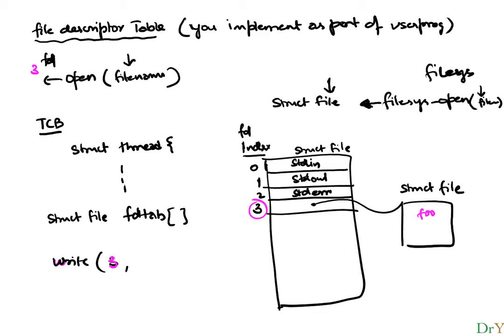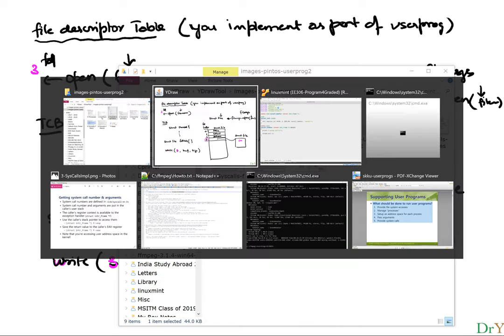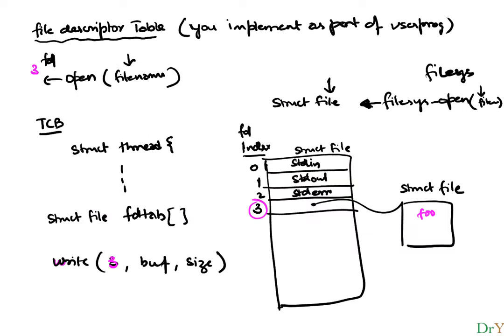After open returns a file descriptor — say 3 for a file foo — all subsequent references to that file use the descriptor. For example, a write call will say: write file descriptor 3, with a buffer and buffer size. You must maintain this data structure as files get created and destroyed, updating it accordingly.